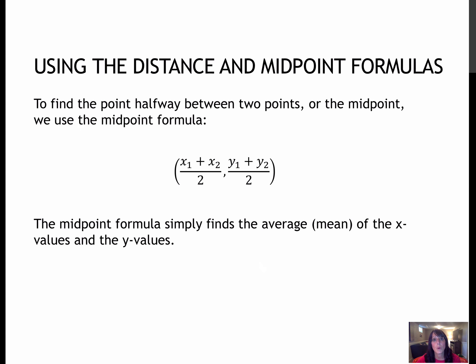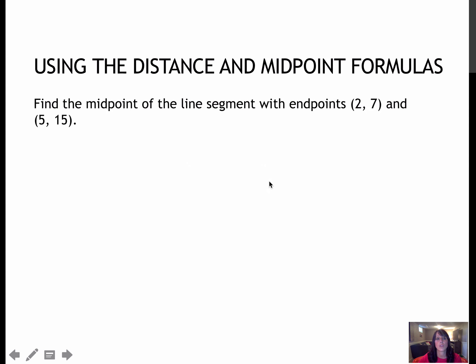This is the midpoint formula. It's related to the distance formula. We always learn them at the same time. The midpoint finds the coordinates of the point that are halfway between the two endpoints of the segment, so that's why we call it the midpoint. When you're using the midpoint formula, you're really just averaging the x values—adding them together, dividing by 2—and averaging the y values—adding them together, divide by 2.